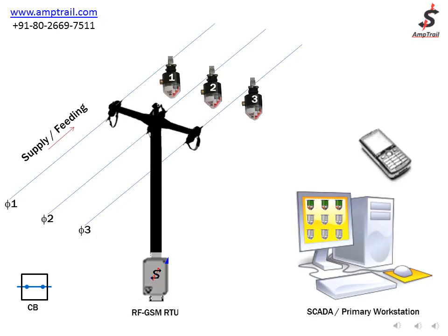This short video demonstrates remote fault identification and reporting features of AmpTry. Consider a three-phase system as shown in the video. FLA3 fault indicators are installed one per each phase. CB refers to the circuit breaker located in the substation. The circuit breaker is normally closed under no fault condition, with the direction of feeding as shown. An RF-GSM RTU is installed on the pole quite close to the FLA3 indicators.